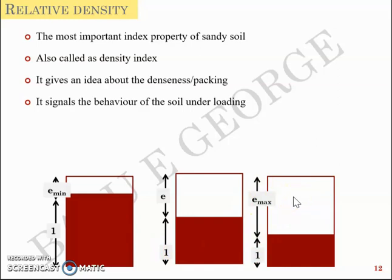Density index or the relative density is (Emax - E)/(Emax - Emin). It signals your position of the soil within the spectrum of the density it can attain. E is the void ratio in your present case and the soil can have a least void ratio or a maximum void ratio. In that spectrum of void ratios or densities, where does your soil stand? That is relative density.